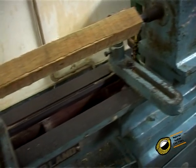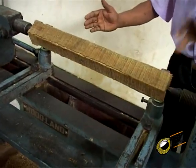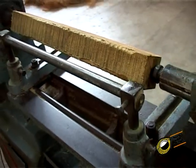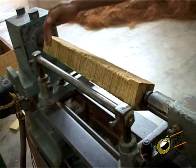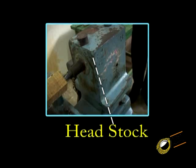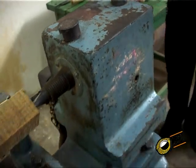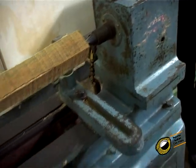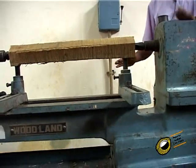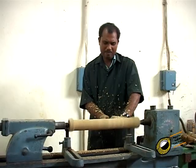The lathe bed forms the base of the machine on which all other parts are strongly mounted. The bed is made of strong cast iron. The headstock and tailstock are located at either end of the bed, and the carriage rests and slides over the lathe bed. The headstock is secured permanently on the inner ways at the left-hand end and provides mechanical means of rotating the workpiece at multiple speeds, with two or three spindle speeds.